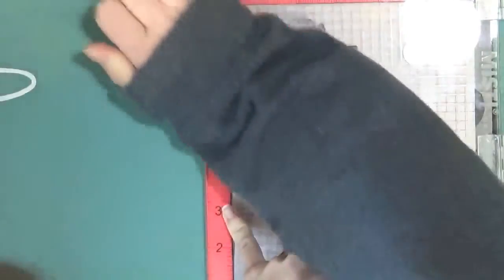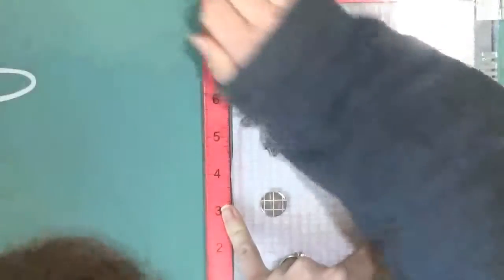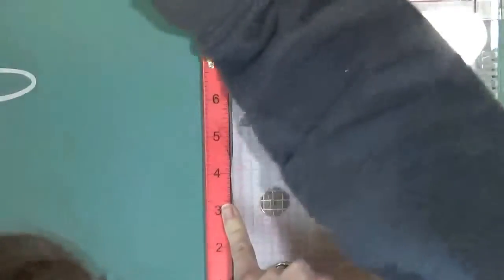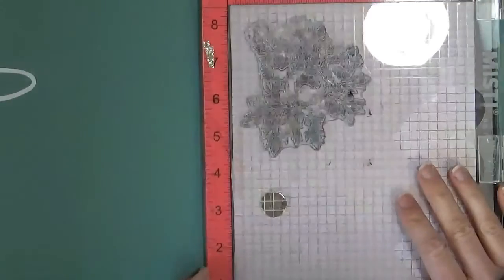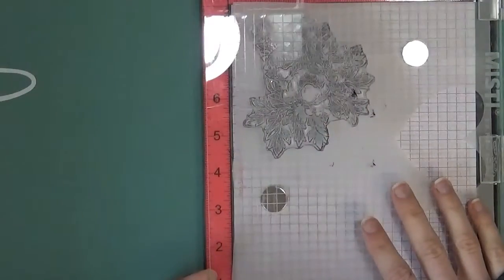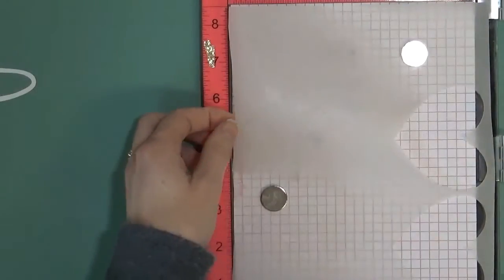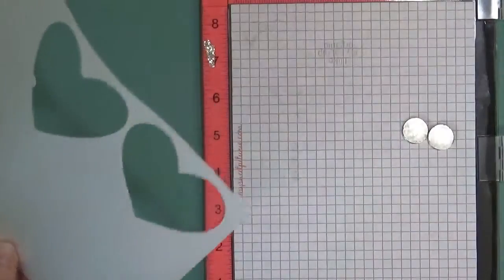And since I am using Versamark which is sticky, it might pull up this vellum a little bit, so I don't know if I'll be able to get it back into place to stamp it twice. So it moved on me so I don't want to take that risk to stamp it again. So I'm just going to go ahead with this. Sprinkle on my white embossing powder.